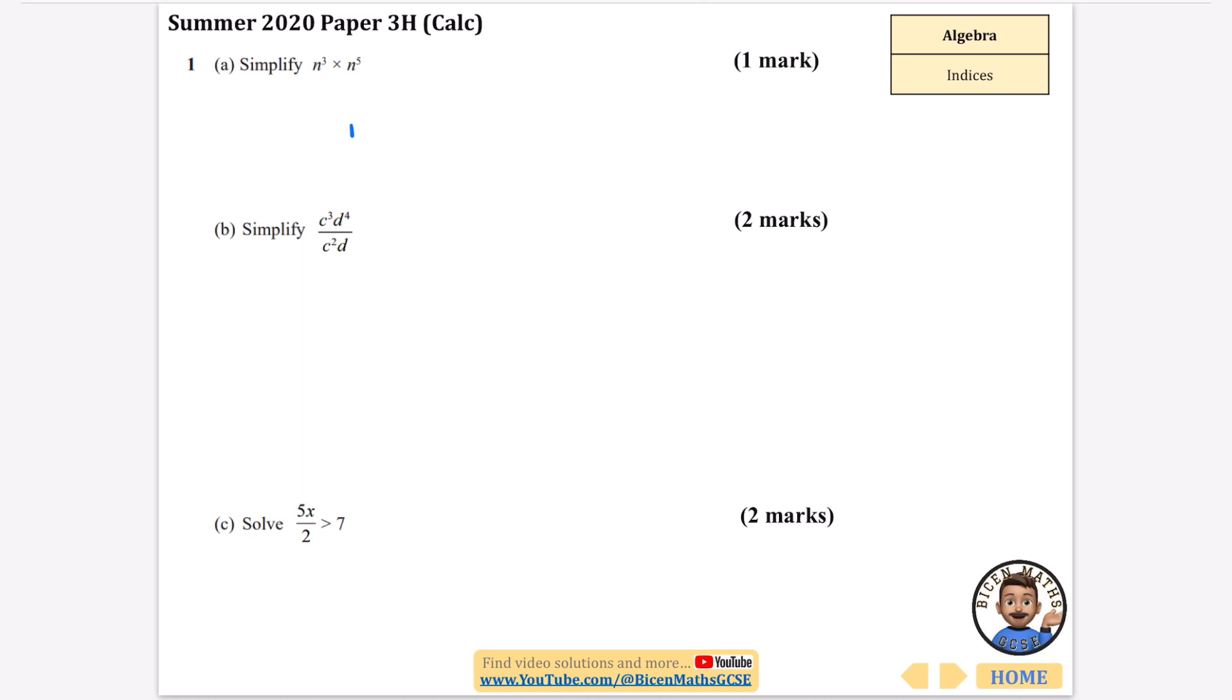Okay, we've got a couple more. Remember, you add the powers when they're multiplying, so this is going to be n to the power of 8. You subtract the powers, so 3 take away 2 is 1. So I'm just going to write c, and d to the power of 4 divided by d is just d cubed. 4 take away 1 is 3.